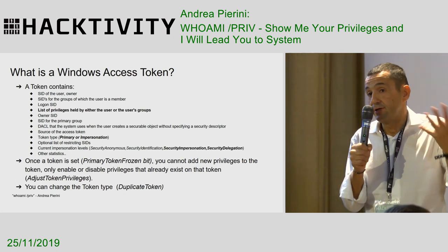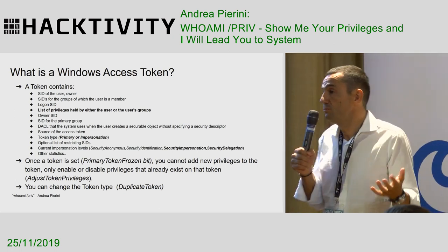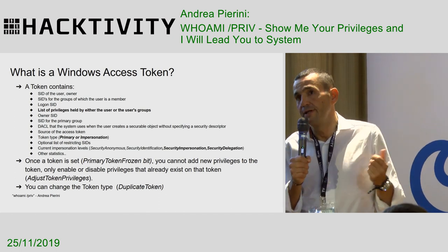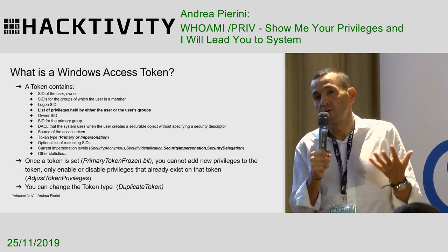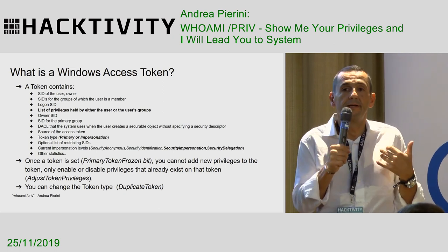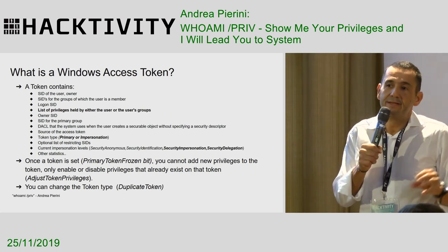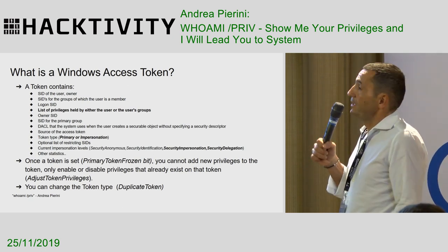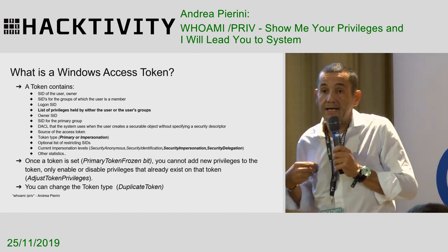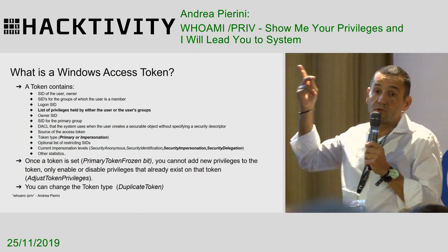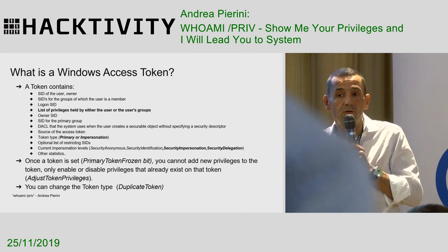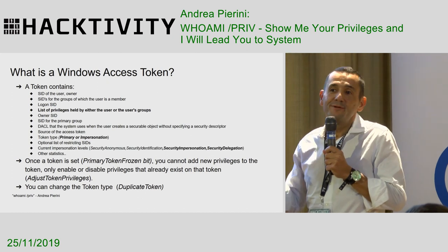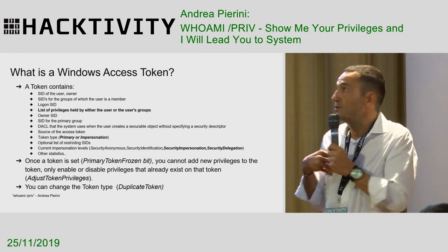A token can be of different types. Primary tokens are mainly used for spawning processes, and impersonation tokens for spawning threads. The only useful types of token for us are the last two: security impersonation or security delegation tokens. These are the only two types we can abuse. The other tokens are very beautiful and have a lot of privileges, but we cannot use them.